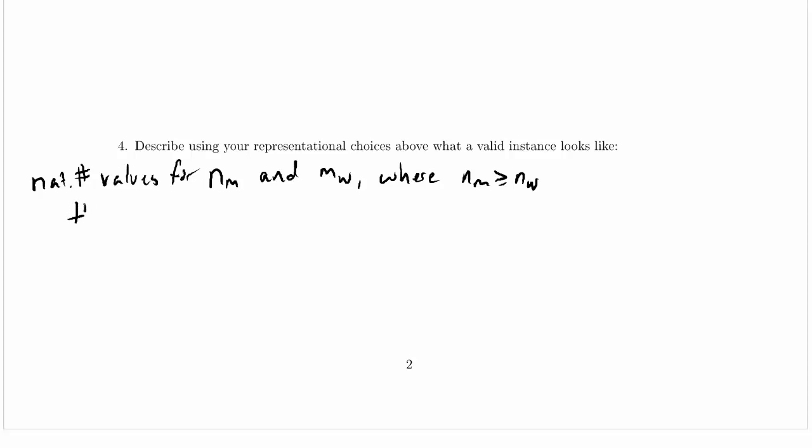So we'll just say NM permutations of W equals 1 to NW, the set of women.